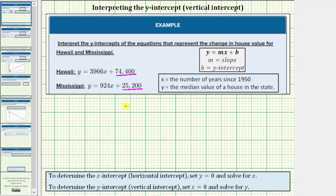Now that we've found the y-intercepts, let's interpret the results. For Hawaii, from the equation, we know that b, the y-intercept, is equal to 74,400. This is a point on the y-axis, so as an ordered pair, it would be zero comma 74,400. Because x equals the number of years since 1950, and y equals the median value of a house in the given state, this ordered pair tells us in 1950, the median value of a house in Hawaii was $74,400.